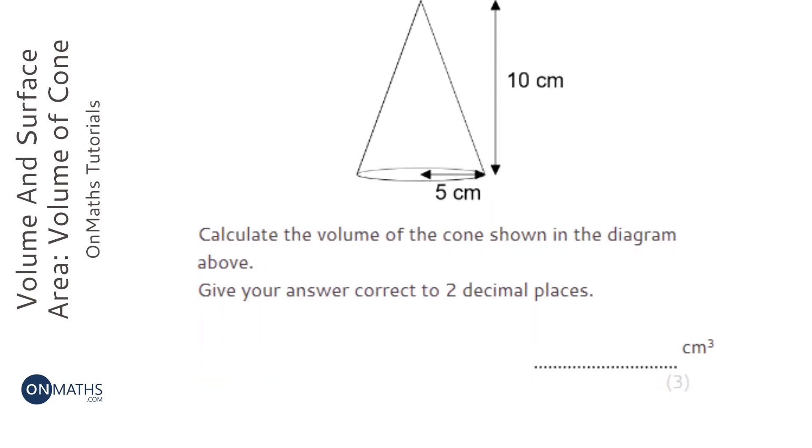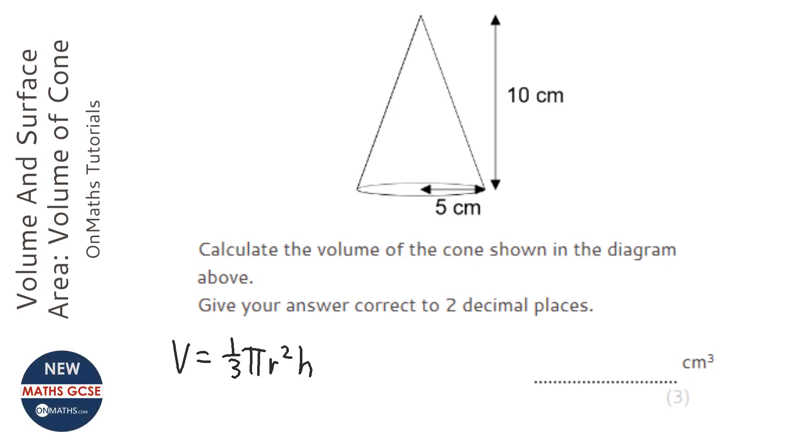To find the volume of a cone, we need the formula: one-third pi r squared h. The r is the radius of the circle at the bottom, and the h is the height.